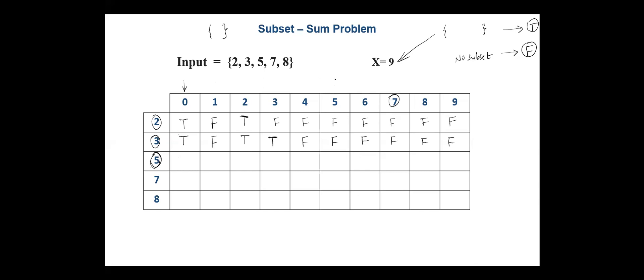Next, we include integer 5. Up to column 4 we copy from the above row: true, false, true, true, false. For column 5: 5 minus 5 is 0; the above row in column 0 has true, so here we have true. For column 6: 6 minus 5 is 1; the above row has false, so false. For column 7: 7 minus 5 is 2; above has true, so true. For column 8: 8 minus 5 is 3; above has true, so true. For column 9: 9 minus 5 is 4; above has false, so false.